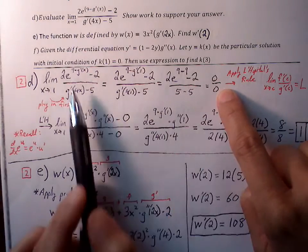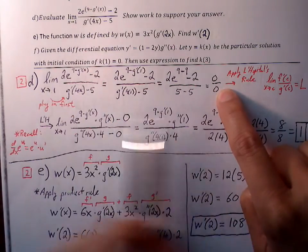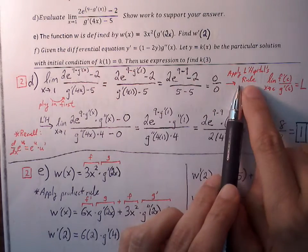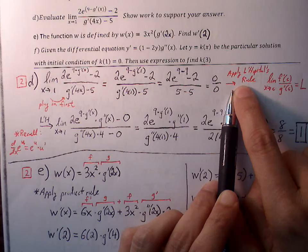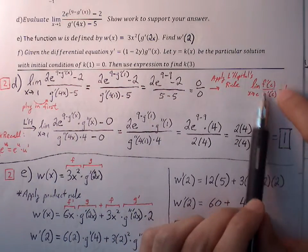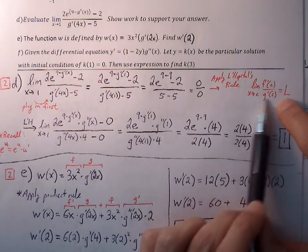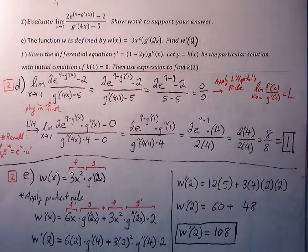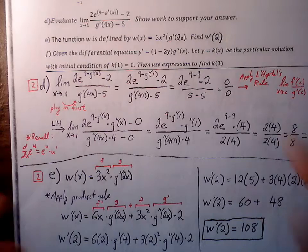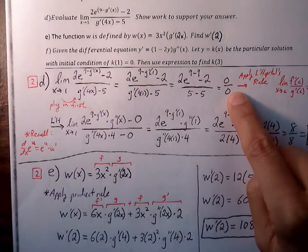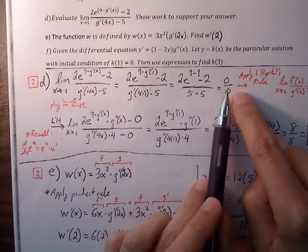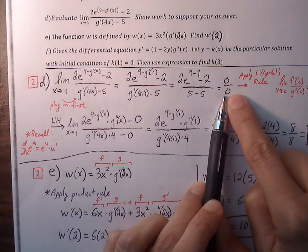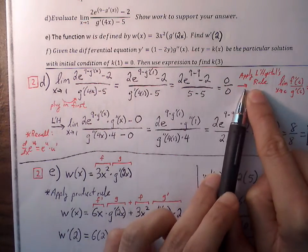This is not something we can factor, so we go through L'Hôpital's rule. L'Hôpital's rule says if we get zero over zero, we can continue by finding the derivative of the numerator and denominator separately, giving us a different form to evaluate our limit. We only apply L'Hôpital's rule after confirming we have zero over zero.